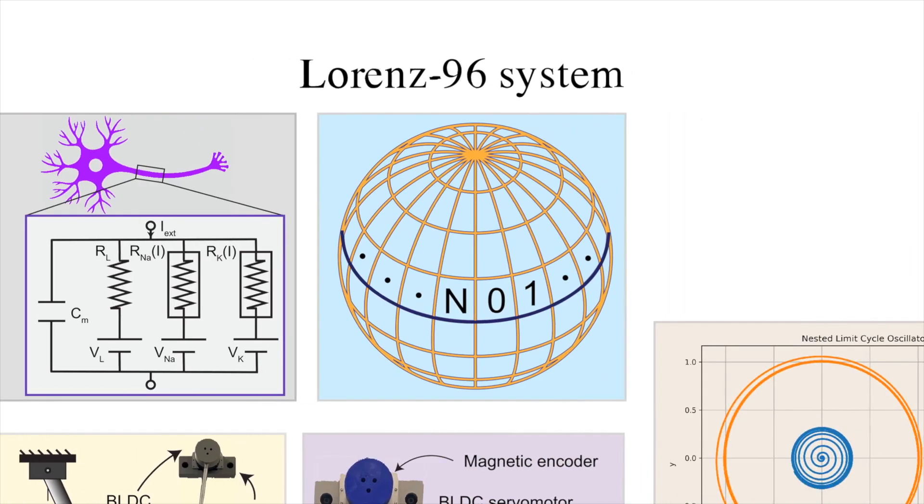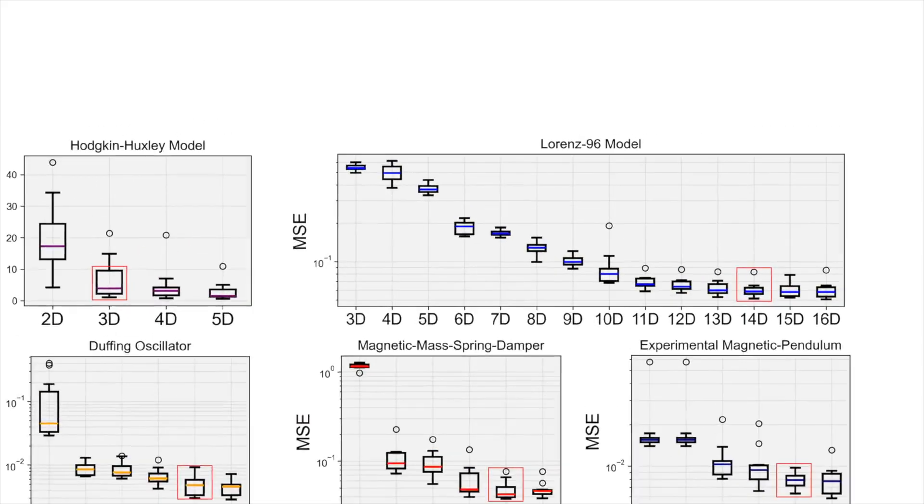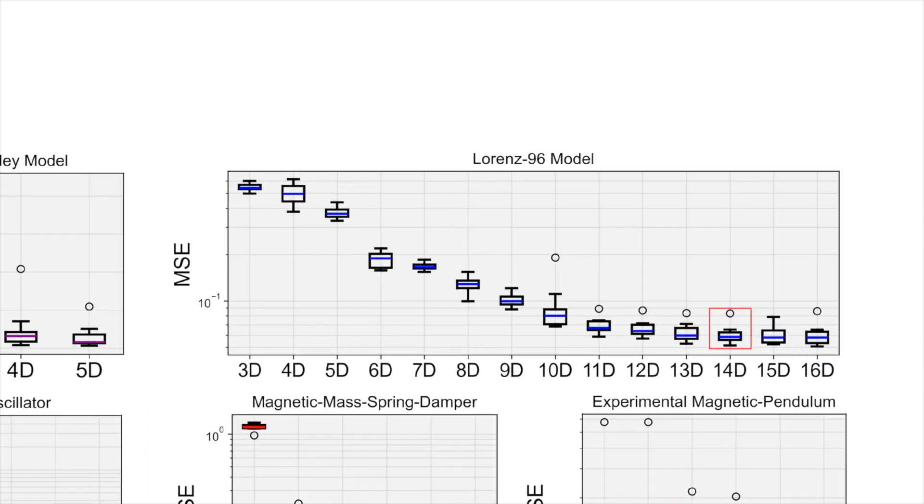Our approach also scales to high-dimensional systems. The Lorenz-96 system in our dataset has 40 states, yet we're able to reduce the dimensionality of the system to 14 while simultaneously linearizing the dynamics.